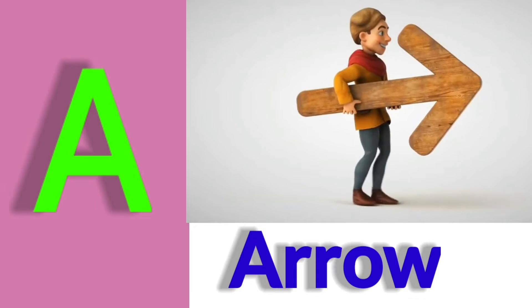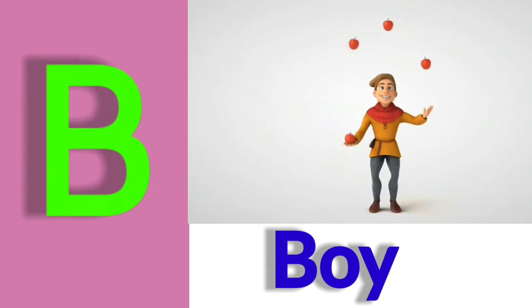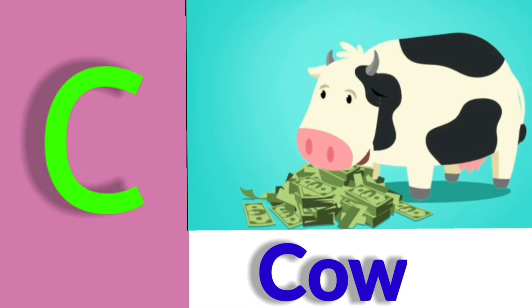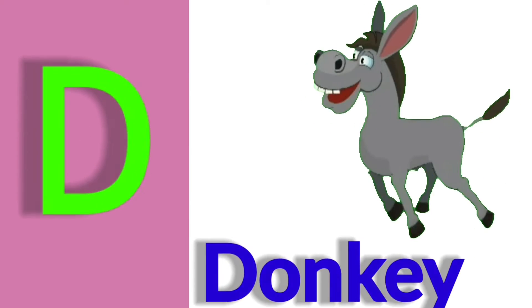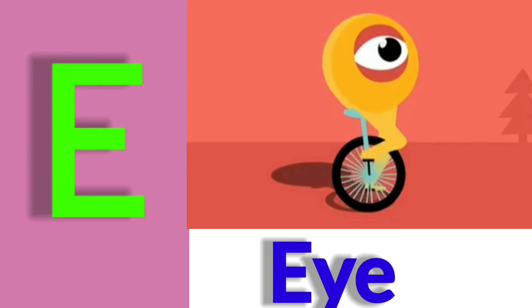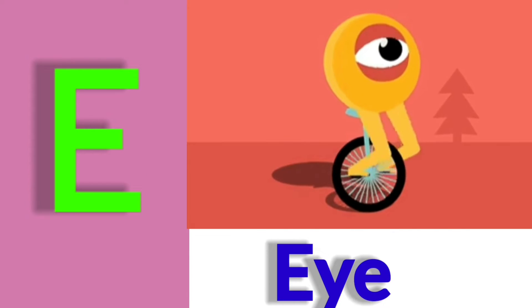A for arrow, B for boy, C for cow, D for donkey, E for eye.